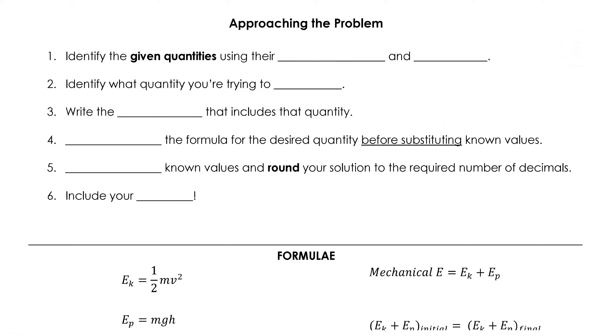In physics, we always approach problems the same way, and so now that the problems we're doing are getting more advanced, I'd like us to formalize the approach we're taking so you can refer back to it later if you get stumped. The first thing we always do is identify the given quantities using their symbols and units. Please remember the difference between a symbol and a unit. For example, if we were dealing with height, the symbol would be h, and the unit for height would be meters, m. Next, you identify what you're trying to find, and you write the formula that includes that quantity. Then we rearrange the formula using algebra to isolate the variable we're looking for. We do this before we substitute known values.